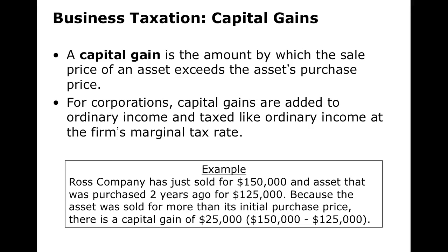A capital gain occurs when you buy a stock — or a piece of equipment — and sell it at a higher price. For corporations, capital gains are treated as ordinary income. For example, Ross Company sold a $150,000 asset that they purchased for $125,000, making a $25,000 capital gain that they'll have to pay tax on. That capital gain gets added to their income, and whatever their marginal tax rate is, that's the rate they'll pay, as long as the additional capital gain fits within that tax bucket.